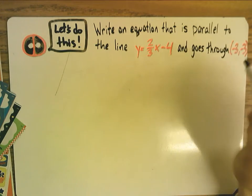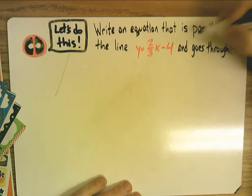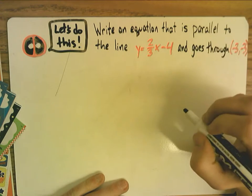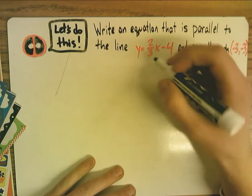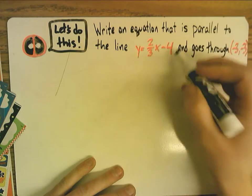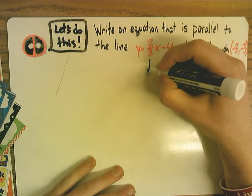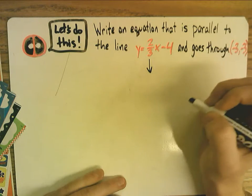All right, so the first thing you have to do when you're dealing with parallel and perpendicular lines is if it says parallel, remember that parallel lines have the same slope. So the only thing we have to do with this starting equation is to find the slope. So its given slope is two over three.